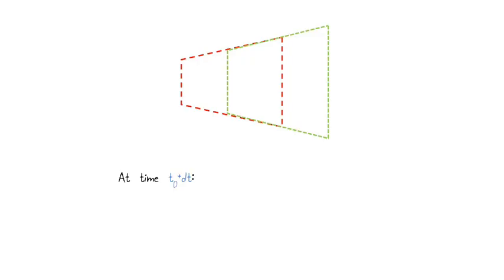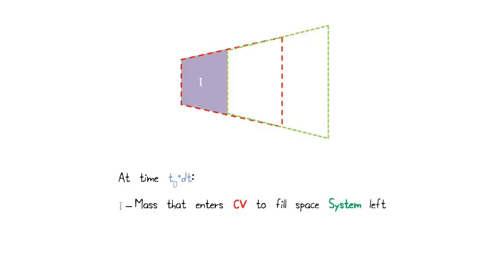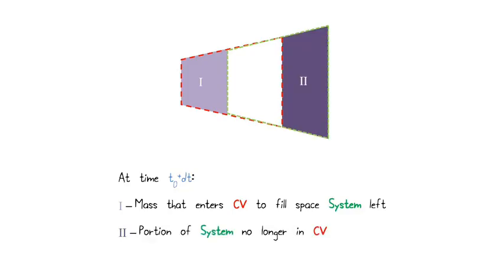We look at what's going on at time t0 plus dt. Our system has moved out to the right. In my control volume, region I is mass that had to enter my control volume to replace the system mass that left — so that's coming in from the left. I also notice that my system now has a portion outside the control volume, and I'm going to call that region II. Region I is the mass that entered the control volume that's not part of the system, and region II is mass within the system that has exited the control volume. These are going to be important in our accounting.